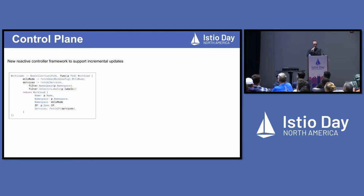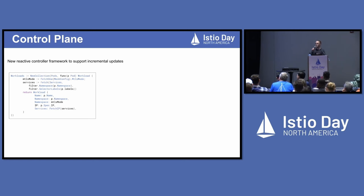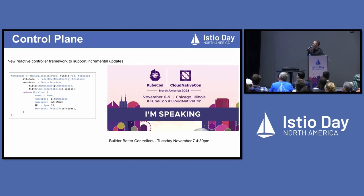On the control plane, one of the things that's challenging with incremental updates is figuring out what actually changed so that we're not either pushing redundant changes, or even worse, failing to push an update when we should have and serving stale data. It turns out this is actually pretty hard to do correctly. We've been working on a new framework that helps to do this automatically so that developers don't have to do it the manual way, which leads to a lot of errors. I don't have a lot of time to talk about it here, but I have a whole talk dedicated to this tomorrow: 'Building Better Controllers.'